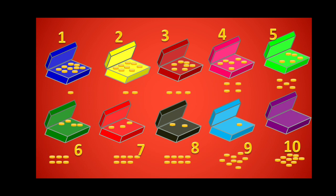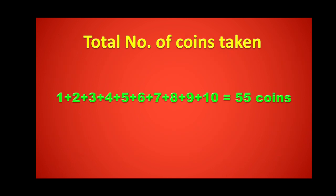Now we are having 1 coin from box 1, 2 from box 2, 3 from box 3, and so on up to 10 coins from box number 10. How many coins totally are we having? Total number of coins taken: 1 plus 2 plus 3 plus 4 and so on up to 10 equals 55 coins.